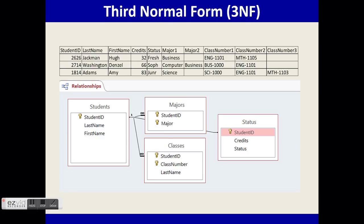Here's the relationship view of the tables in third normal form. Note the relationships: there is a one-to-many between students and majors, and a one-to-many between students and classes. But there is a one-to-one relationship between the students table and the status table, because one student will still have a total number of credits and a status.